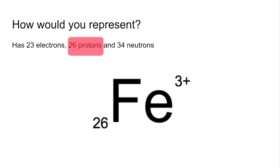And now for the mass number, it's the protons and neutrons that make up the mass, so we're adding 26 to 34, and we get 60. So that's how you would represent that.